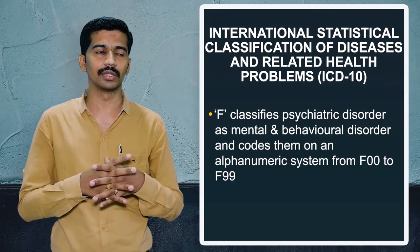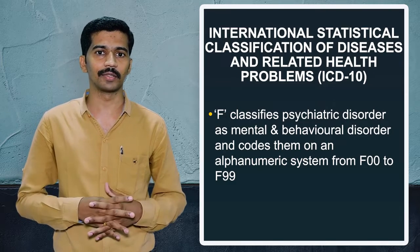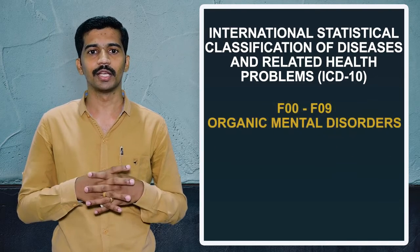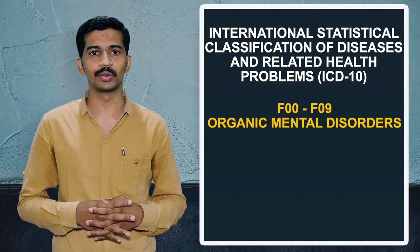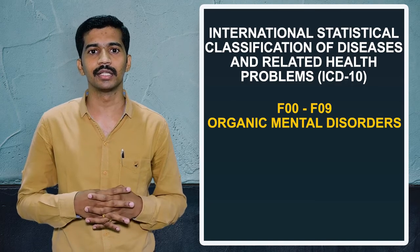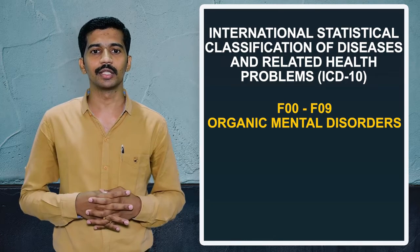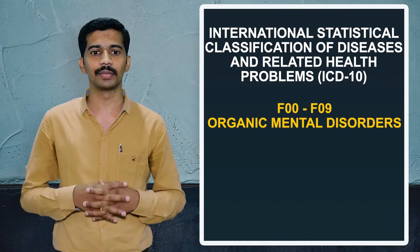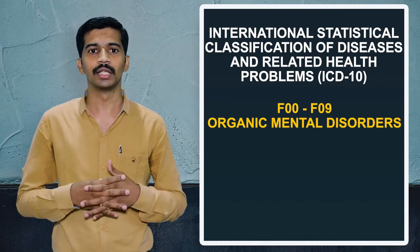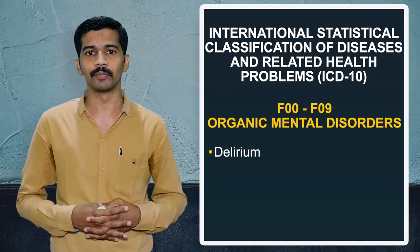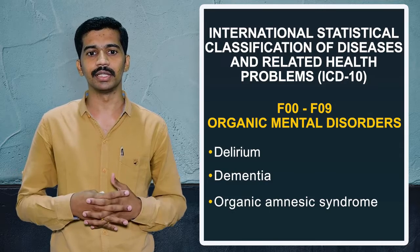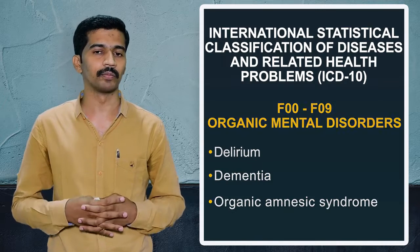The first chapter, F00 to F09, covers organic mental disorders. This chapter includes delirium, dementia, and organic amnestic syndrome.